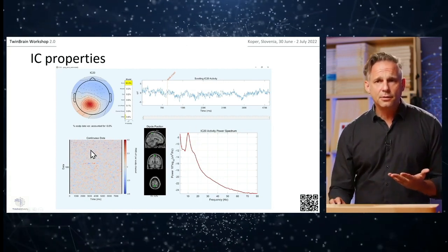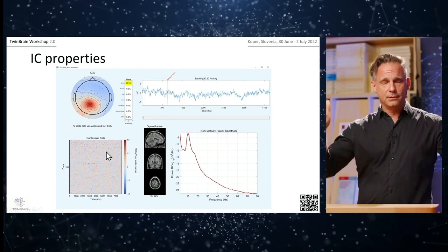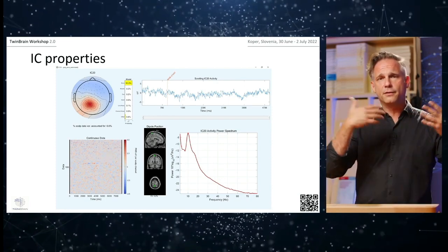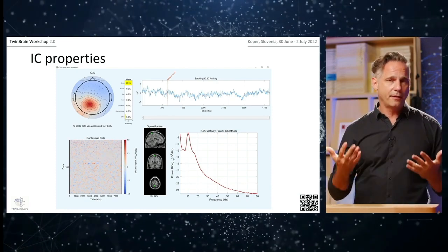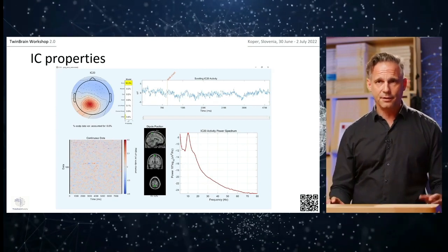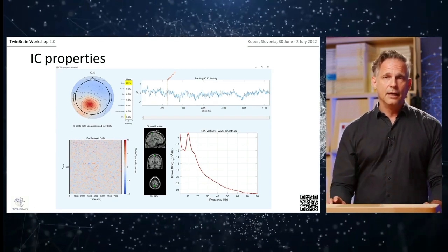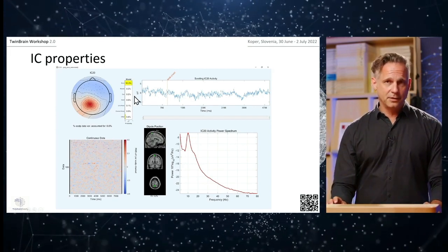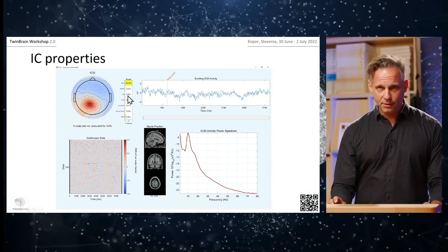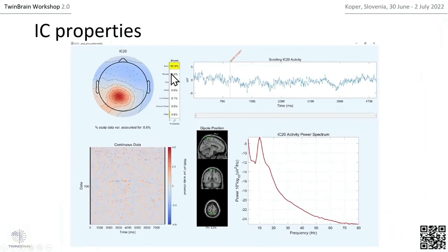You can look into the data, chop it up in time, and compare different stretches to see if there are systematic patterns. One recent tool added to the mix is IC Label, which gives you a probability — based on different dimensions of each IC — of what kind of process that IC most probably represents. I'll talk about this a bit later.